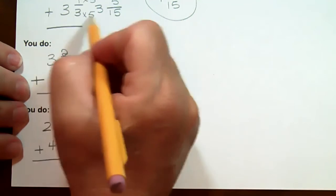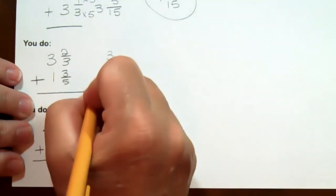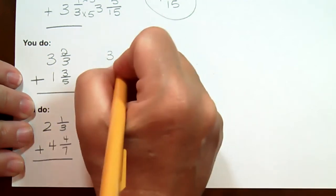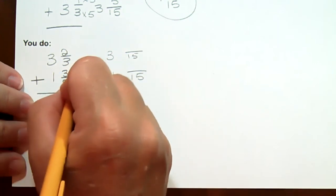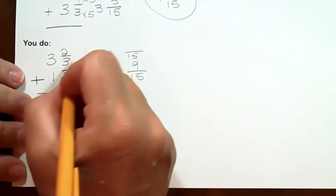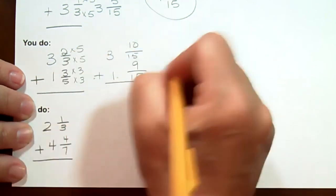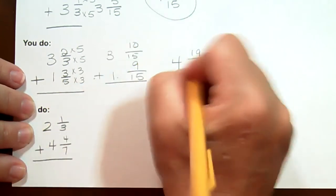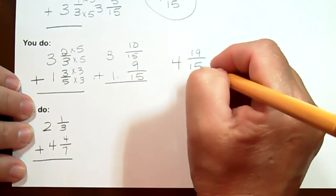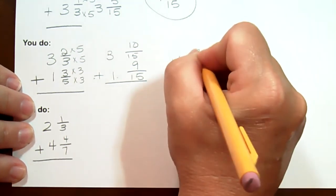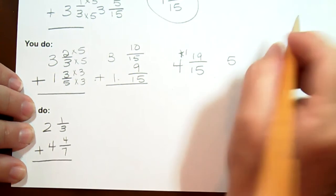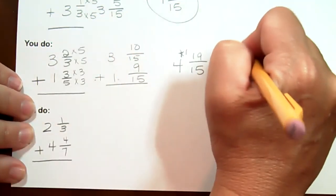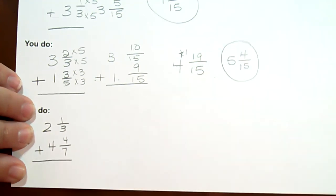Let's look at the first of the last two problems: three and two-thirds plus one and three-fifths. We already know the common denominator for five and three is fifteen. Five goes into fifteen three times, and three times three is nine. Three goes into fifteen five times, and two times five is ten. Three plus one is four; ten plus nine is nineteen over fifteen — that's improper. Fifteen goes into nineteen one time with four left over, so the answer is five and four-fifteenths.